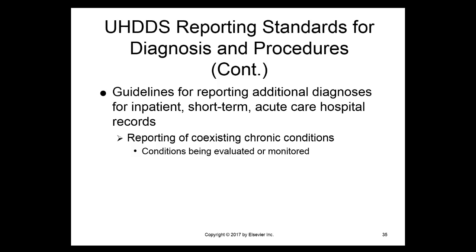If we look at the next example on page 36, the physician documents that the patient has a past history of a seizure disorder. When you look at the medication list, you can see that the patient is on Dilantin. So this patient currently has a seizure disorder — it's not a past history. It's a current condition that they are receiving treatment for in the form of that medication. So in this instance, we would actually code the seizure disorder.